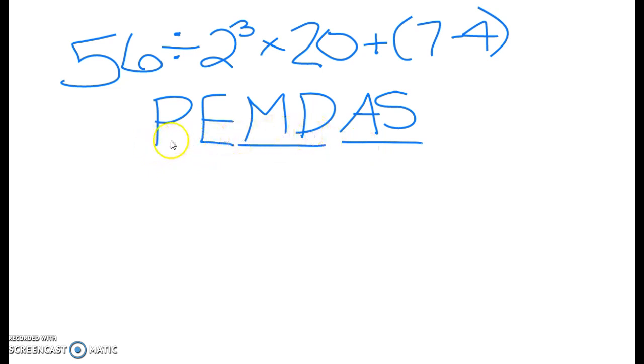But let's start to solve this problem. We start with the P, which is parentheses, and we only have one term here in parentheses, and that's seven minus four. So that's what we'll do first.